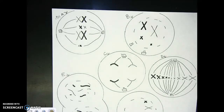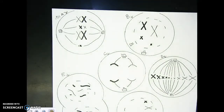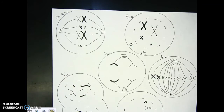Today's lesson is on identifying cells based on what phase they're in, what process they're in, and identifying the haploid and diploid number for the organism shown in the different cells. I've put together pictures of different randomized cells with different numbers of haploid and diploid, in different phases in no particular order.